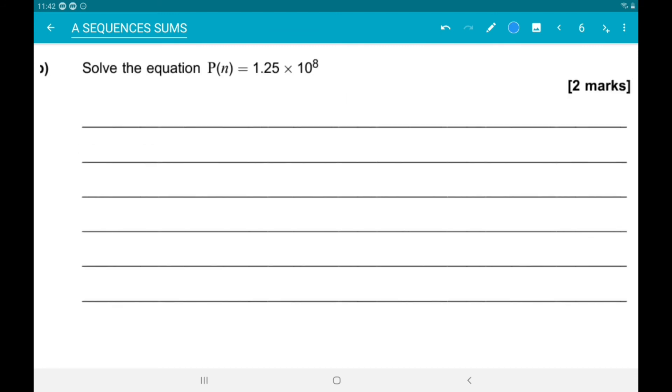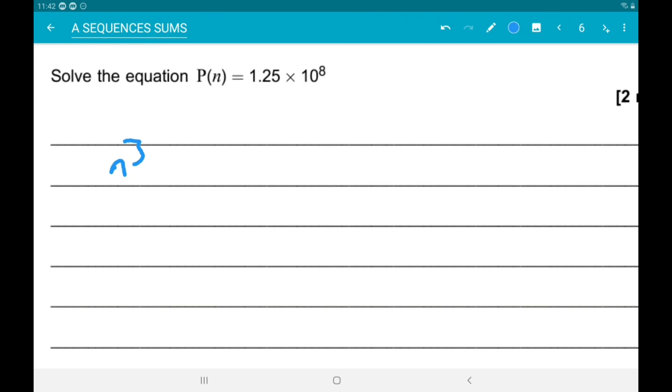And then p of n is 1.25 times 10 to the power of 8. Alright, so again, p of n is just n cubed. And the right hand side is 1.25 with 6 zeros, so 1.25 million. And then just cube root both sides. We get n is 500.